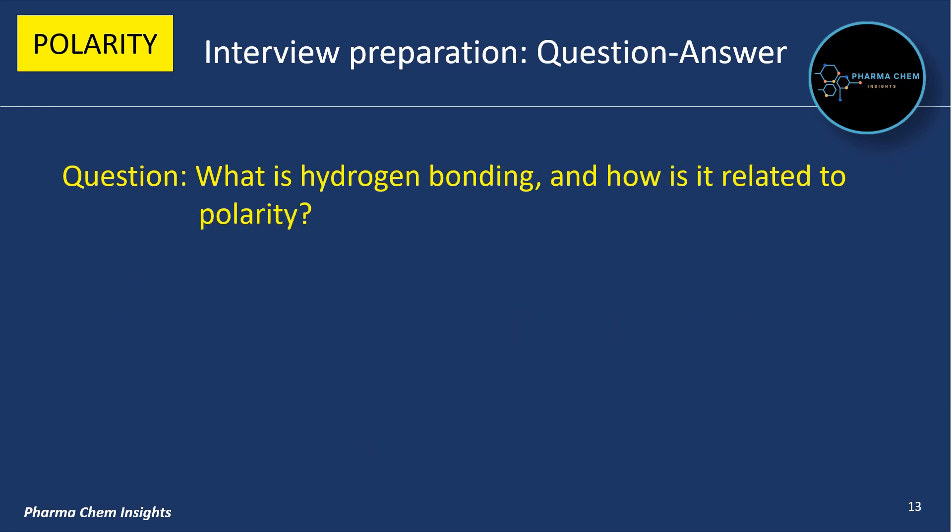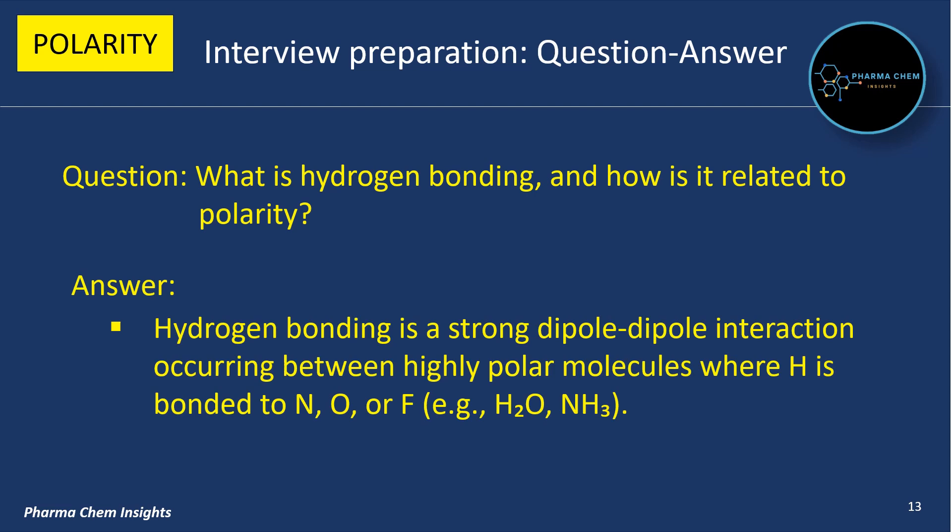Next question: what is hydrogen bonding and how is it related to polarity? Answer: hydrogen bonding is a strong dipole-dipole interaction occurring between highly polar molecules, where hydrogen is bonded to nitrogen, oxygen, or fluorine — example: water and NH3 (ammonia).